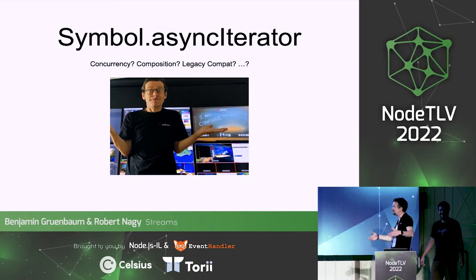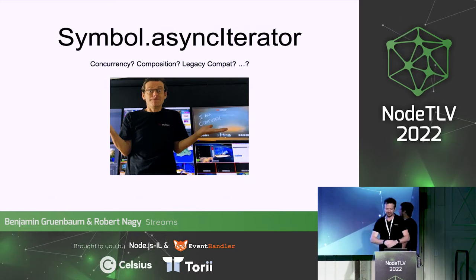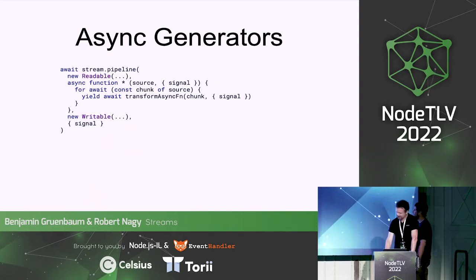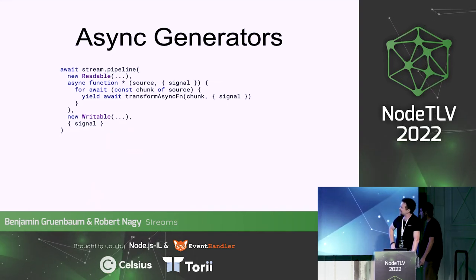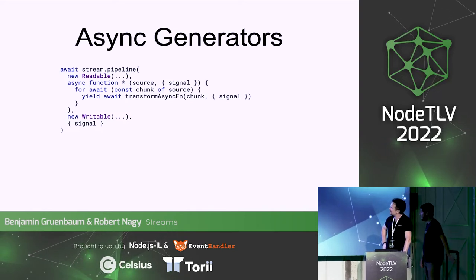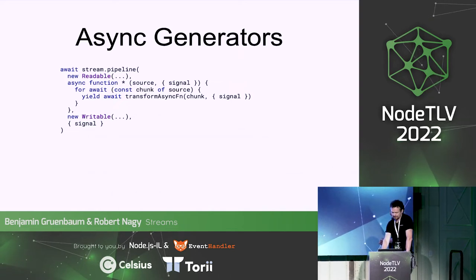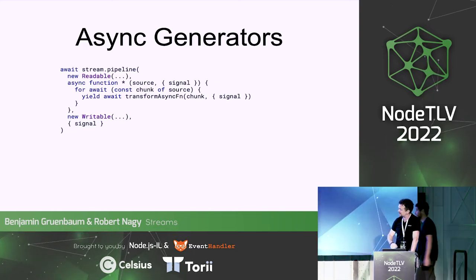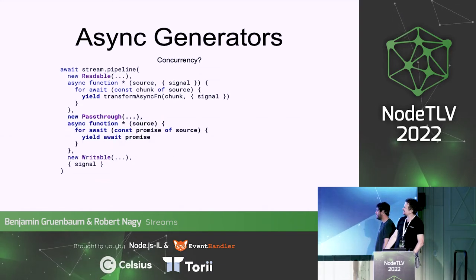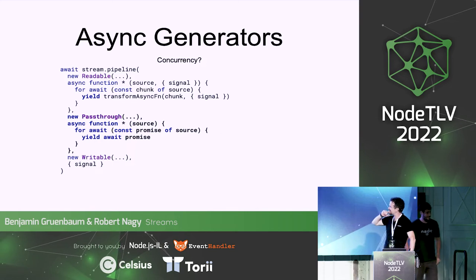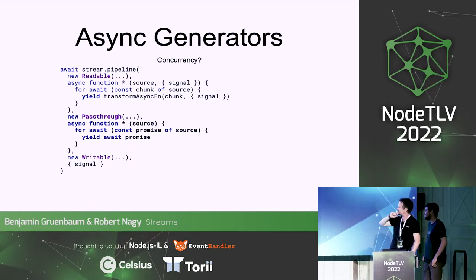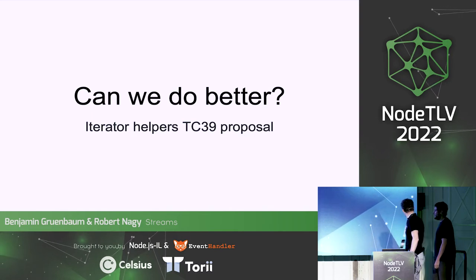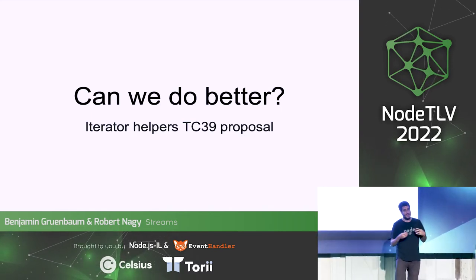There's also concurrency, composition, and legacy compatibility with old-style streams — it just becomes a mess. How about putting async generators into pipeline? That's reasonably good, but if we want concurrency — running more than one async transform at a time — things get complicated again. We end up yielding promises, buffering them in a pass-through, and then awaiting them in a generator afterwards.